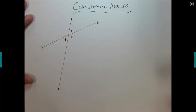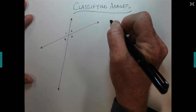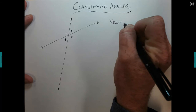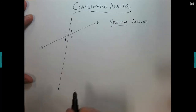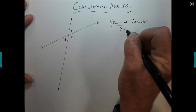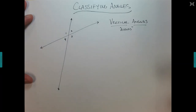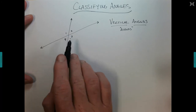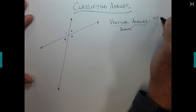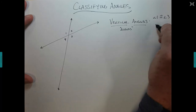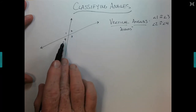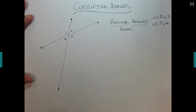First, we have angles that are across from each other, called vertical angles. Those are the ones that are across from each other. An example would be angle one and three. Angle one and three are not only vertical, but they're always going to be the same measure. We also have another pair: angle two and four. Those are called vertical angles, and they're congruent by the vertical angle theorem.